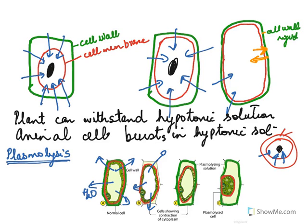As stated in the textbook: when a living cell loses water through osmosis, there is a shrinkage or contraction of the contents of the cell away from the cell wall. This phenomenon is known as plasmolysis. So the plasma membrane moves away from the cell wall due to osmosis — the loss of water. This is plasmolysis.